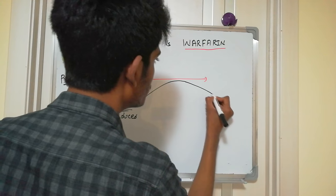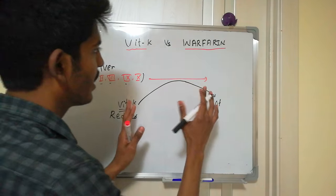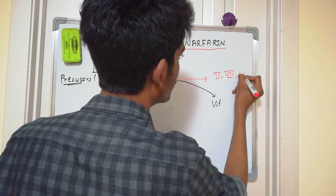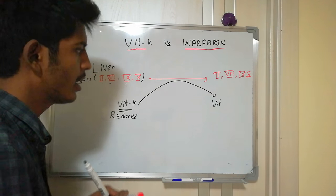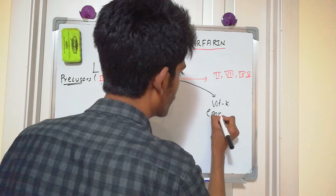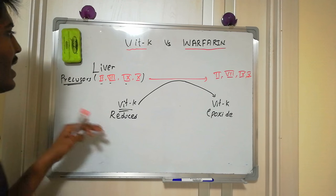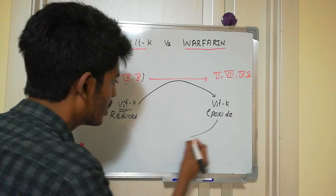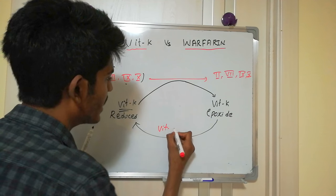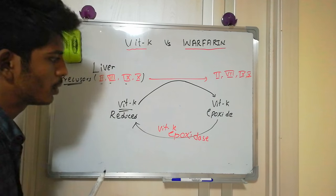Vitamin K in its reduced form is the one involved in the formation of these clotting factors. After this reaction, the reduced vitamin K is converted into vitamin K epoxide. This vitamin K epoxide must then be converted back into reduced vitamin K so it can participate in the reaction again. That conversion is carried out by the enzyme vitamin K epoxidase.